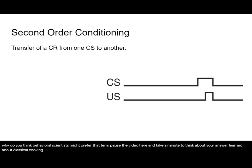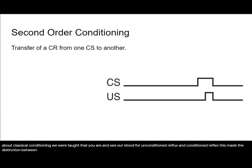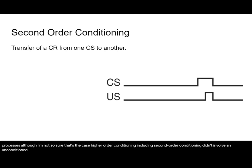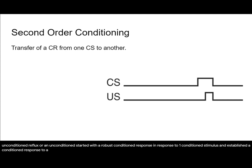When I first learned about classical conditioning, we were taught that UR and CR stood for unconditioned reflex and conditioned reflex. This made the distinction between conditioning and higher-order conditioning a really important one, because it implied that they involved different processes, although I'm not so sure that's the case. Higher-order conditioning, including second-order conditioning, didn't involve an unconditioned reflex or an unconditioned stimulus. Instead, it started with a robust conditioned response to one conditioned stimulus and established a conditioned response to a new, initially neutral conditioned stimulus by presenting those two conditioned stimuli together.